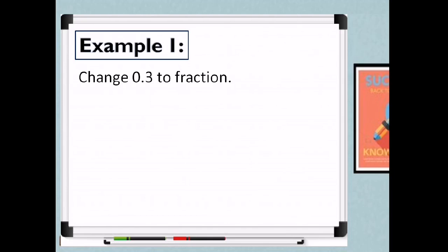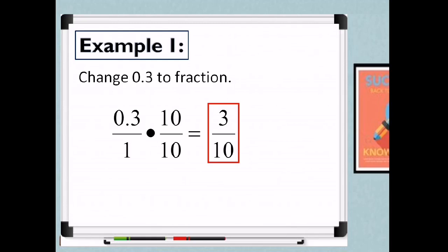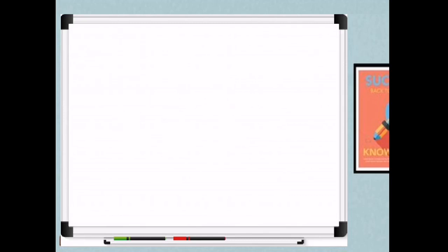Let's have the first example. Change 0.3 to a fraction. As you can notice, it is in the tenths place. That means we consider how many decimal places it has. Since it's tenths, we need to multiply it by 10 over 10. So the denominator of 0.3 is 1. Multiply by 10 depending on the place value of the decimal. So 0.3 times 10 is 3, and 1 times 10 is 10. So 0.3 is 3 over 10, which is already in reduced form.